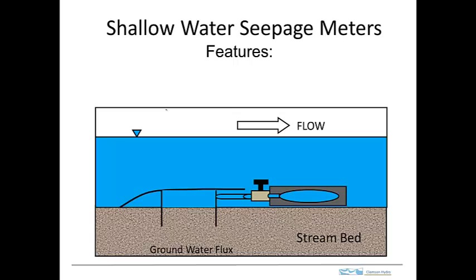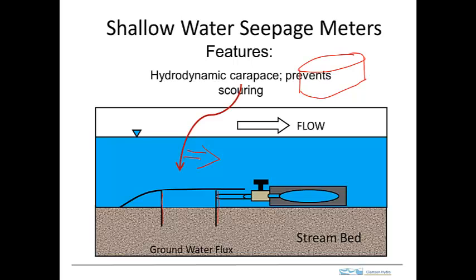This is a cross section through a pan and bag seepage meter. This is the pan right here. This is typically a cylindrical device, and this diagram is just cut right down the middle. The flow in the stream is going in this direction. The pan on the seepage meter has a protective cover over it. This is called a carapace and this causes the flow in the stream to go up and over the pan, and that helps prevent scouring around the pan.